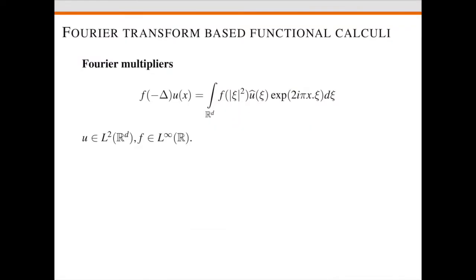Let me start by reminding you what these concrete functional calculi that we are trying to generalize are. A Fourier multiplier is an operator where you take the Fourier transform of a function u in L2, multiply it by something, then take the inverse Fourier transform. As long as you're multiplying by a symbol that is in L-infinity, you define a bounded linear operator on L2, as a consequence of the fact that the Fourier transform is an isometry. More generally, you can discuss when this operator is bounded on Lp spaces for different values of p, which will require some smoothness and decay information on the symbol f.